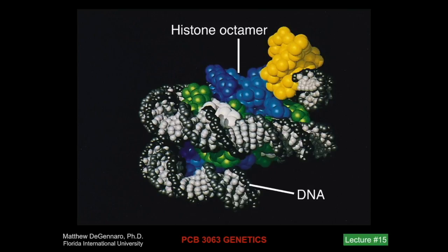Here we have a histone octamer with DNA wrapped around it, forming a nucleosome. The nucleosome structure is critical for turning on and turning off gene expression in eukaryotes, and we're going to discuss this today as we discuss how gene regulation occurs in eukaryotes.